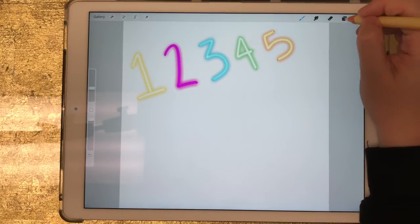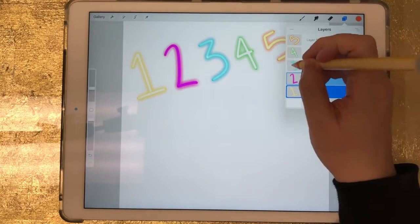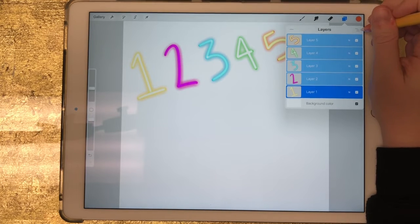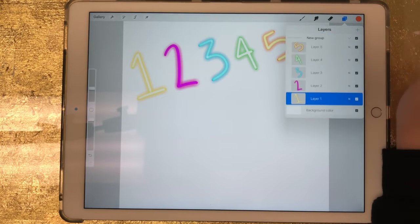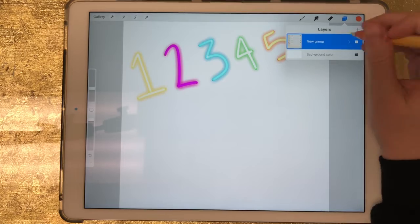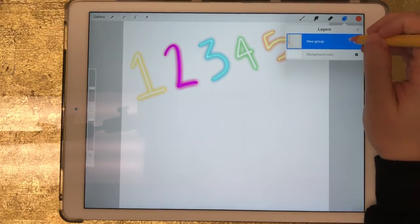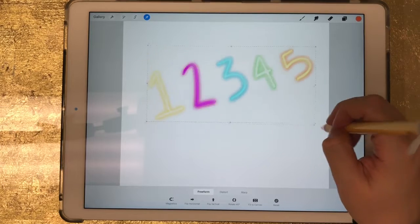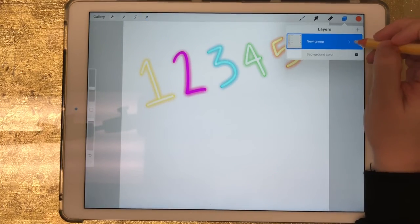So now if I wanted to group these layers, I would do that by again going to my layers and swiping to select the ones that I want to group, and then I would select these lines in the upper right hand corner, and that would create a group. So now when the group is selected, it selects all of the layers that are in that group.